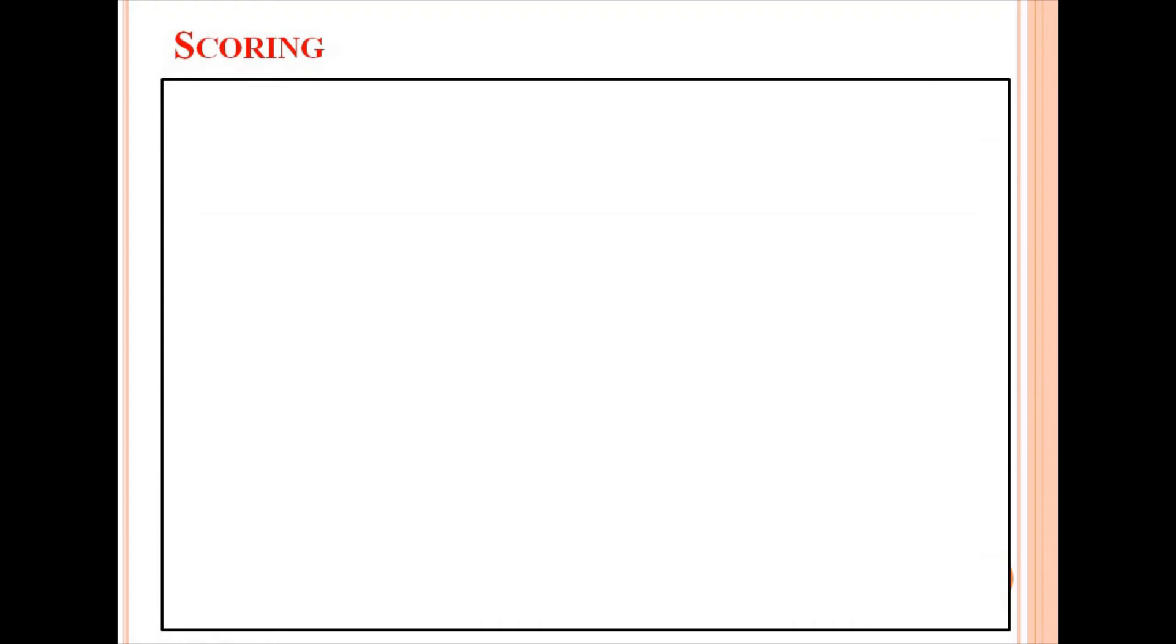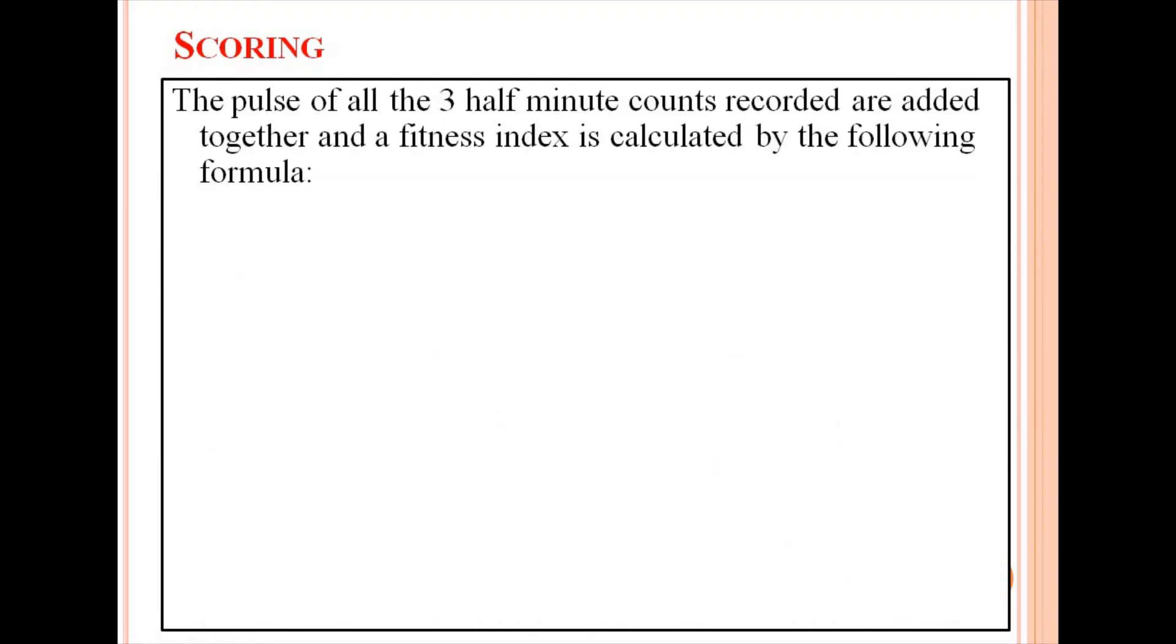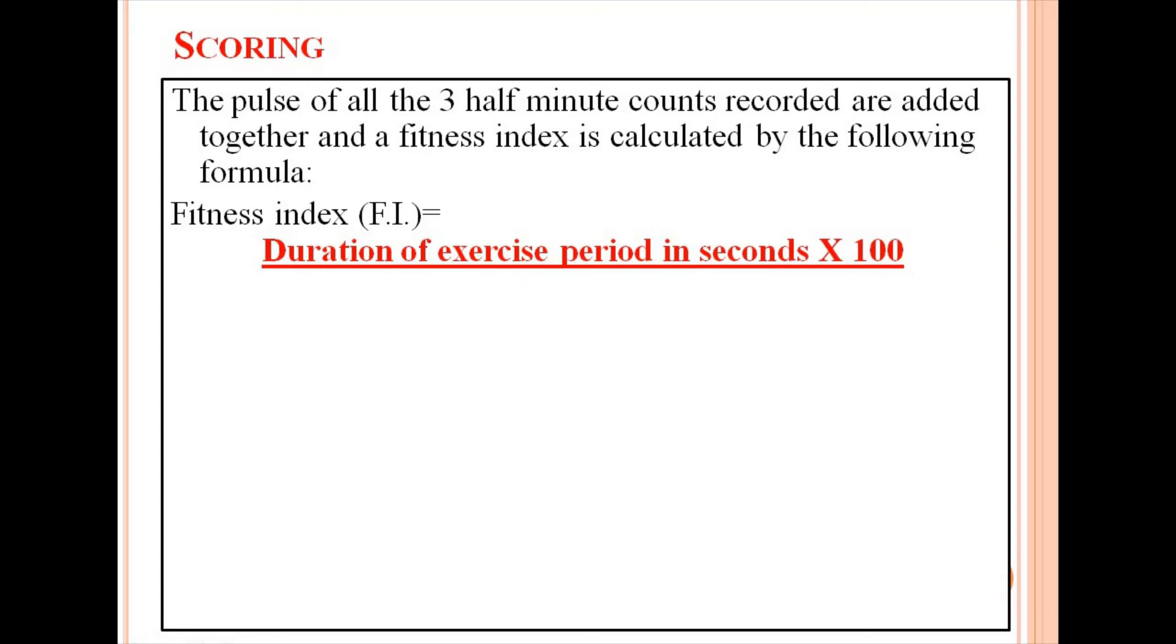Scoring: The pulse of all the three half-minute counts recorded are added together and a fitness index is calculated by the following formula. Fitness index equals duration of exercise period in seconds times 100 divided by 2 times sum of three pulse counts after exercise.